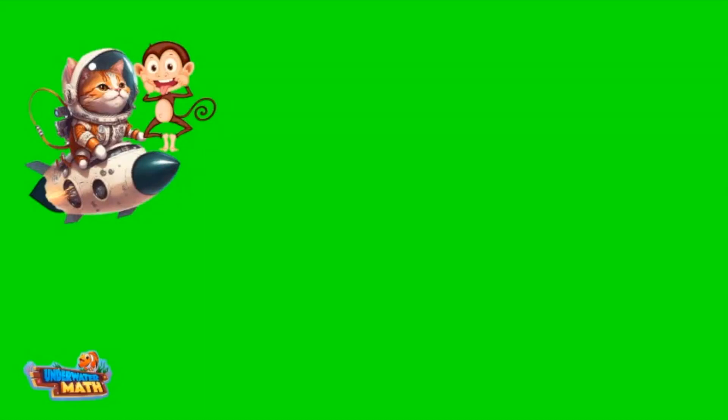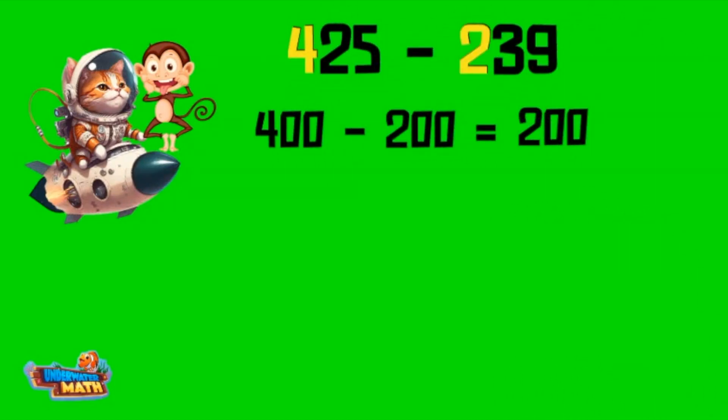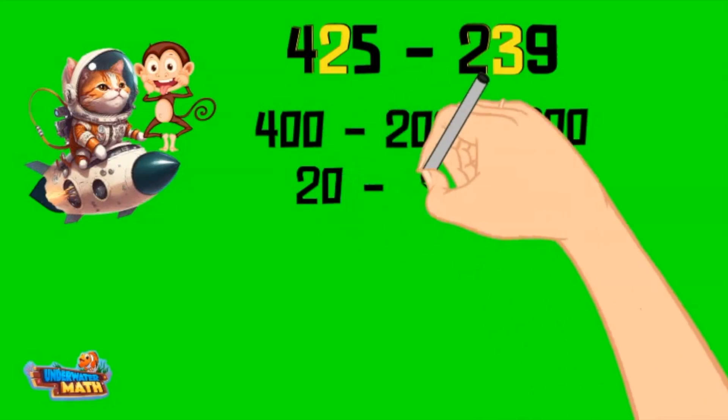I want to end with a tricky one. Here it is: 425 minus 239. I got this. I start in the hundreds place: 400 minus 200 equals 200. Then move to the tens. This gives me 20 minus 30. Uh oh.